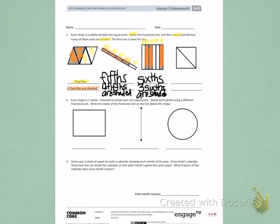Try the fourth picture by yourself. First, count the equal parts and name the fractional unit. And second, write how many parts are shaded.